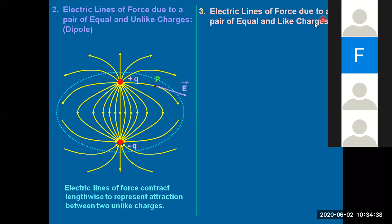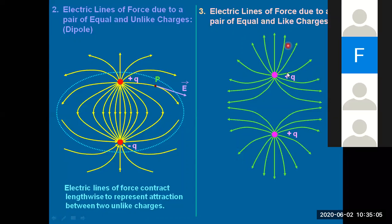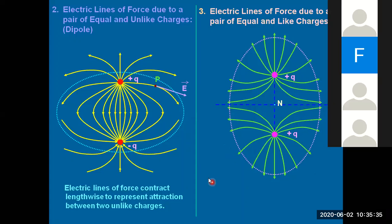For electric lines of force due to a pair of equal and like charges — both positive (plus q and plus q) — both arrow marks should be outwards. The field lines form curved loop-like shapes, diverging away from each other since like charges repel. You can draw an x and y axis to represent them moving away, with a spherical line indicating the extent of the electric field. This type of diagram is a two-mark question.